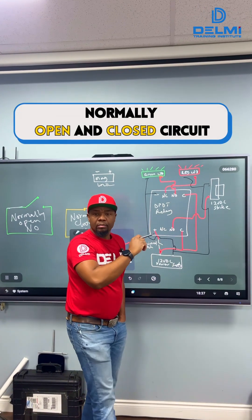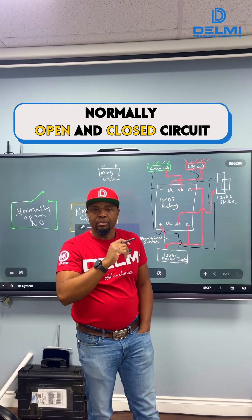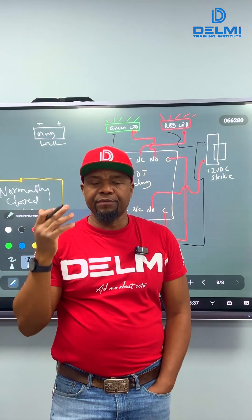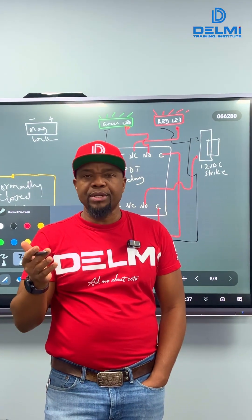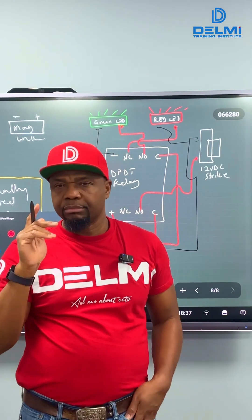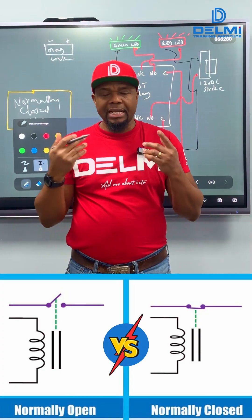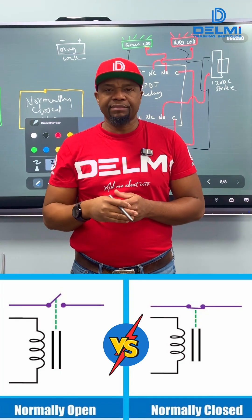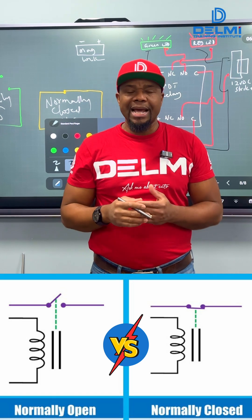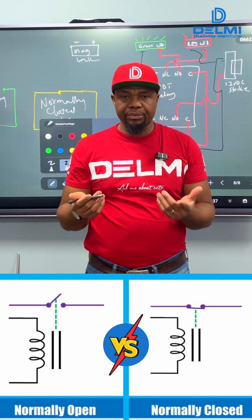Hey Roland, I'm still a little confused on normally open and normally closed circuits. Well you don't have to be. The difference between a normally open and a normally closed state circuits are just two distinct things. One of them has electrical connectivity between both the poles and the throws, and the other one has no electrical connectivity between the pole and the throw.